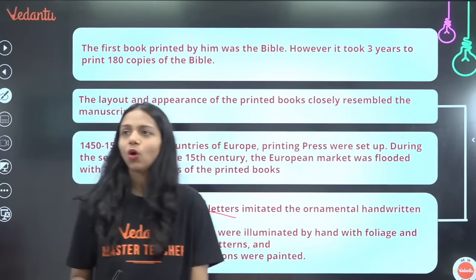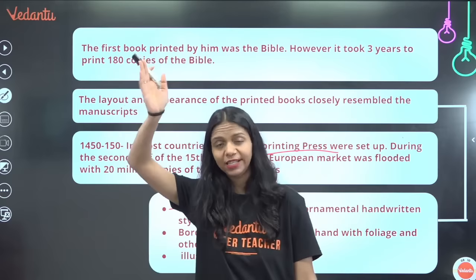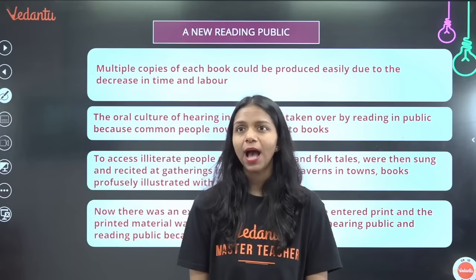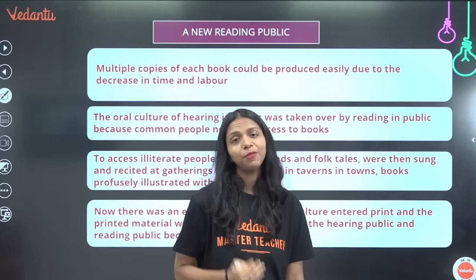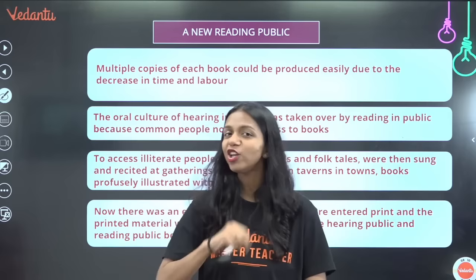From 1450 to 1550, most countries had set up printing presses. Whereas Gutenberg took three years to make a handful of copies, now 20 million books had come into the European market. Because the time and labor required to print books had reduced greatly, machinery was being used more and more, so books were published in greater numbers and people started reading more. Books became cheaper and people started buying them.